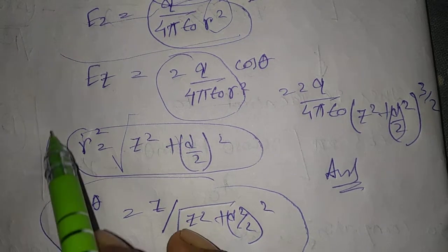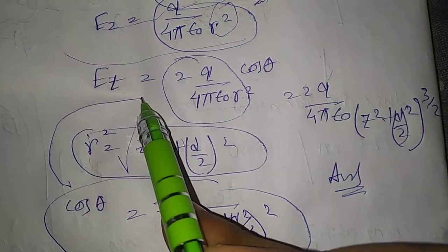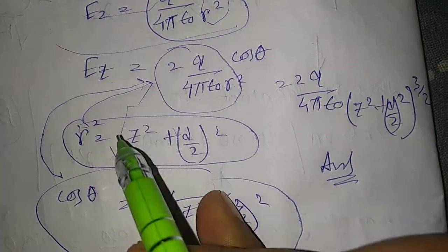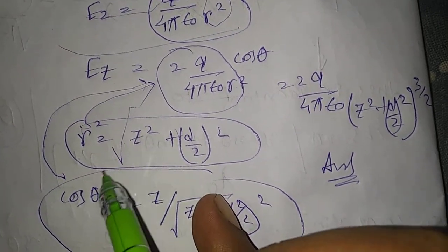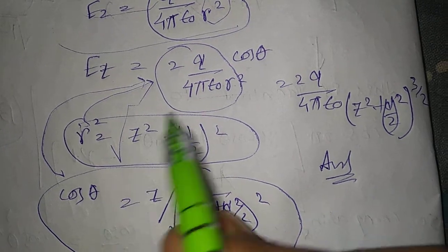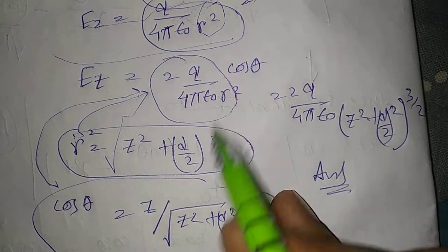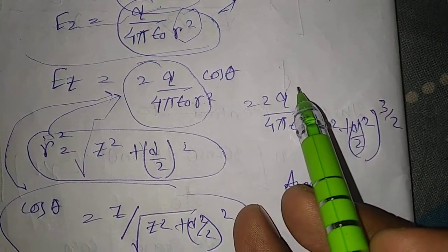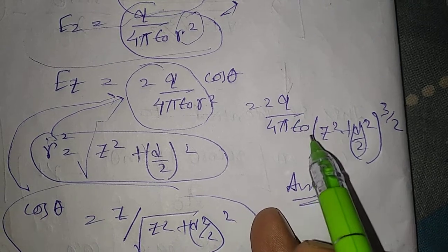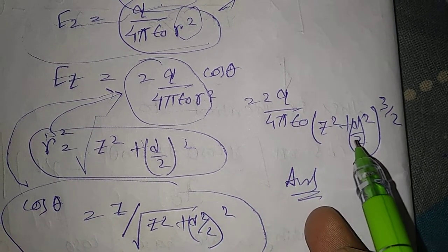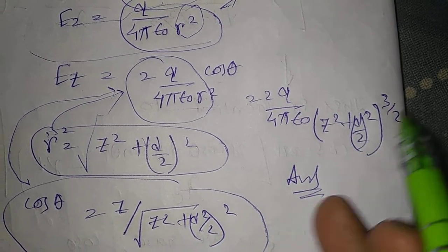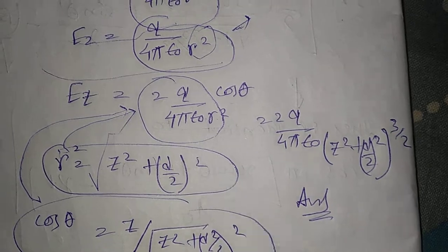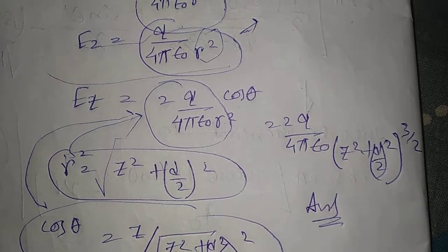Putting the values of r squared and cos theta into the expression for E_Z, the electric field is 2Q divided by 4 pi epsilon naught, times (Z squared plus (d/2) squared) to the power 3 by 2. Thank you.